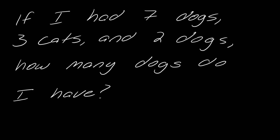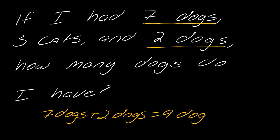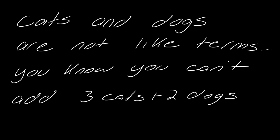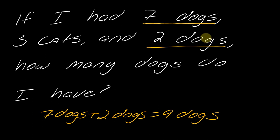Let's say that I have seven dogs, three cats, and two dogs. How many dogs do I have? You can tell just by reading this, right? You have seven dogs and two dogs, so seven dogs plus two dogs, you have nine dogs. And cats and dogs, those are not like terms. So you can't add three cats plus two dogs. You're not going to get five cat dogs, right? So the idea of like terms we see in everyday life, we just group up the things that are in the same category.